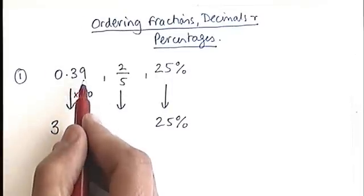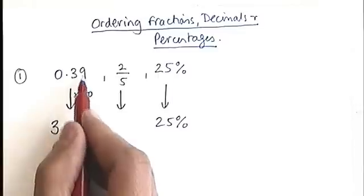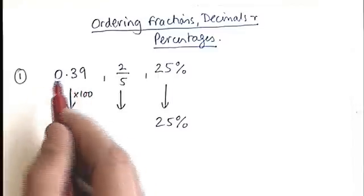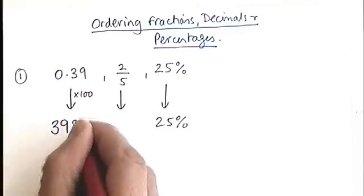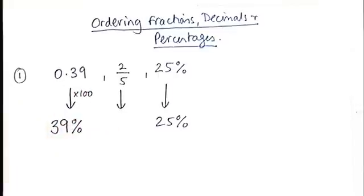So that becomes a 30. And the 9 is going to move from the hundredths to the tenths and then the units. So we end up with 39%.